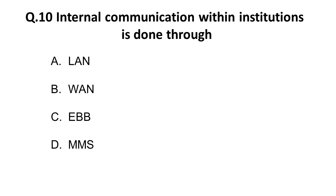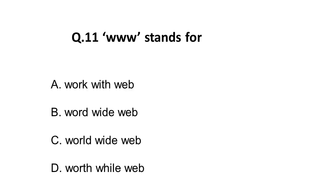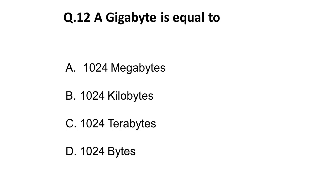The tenth question: the internal communication within the institution is done through what? It is done through LAN, that is Local Area Network. The eleventh question: WWW stands for — it is an easy question but good to revise. It stands for World Wide Web, that is option C.